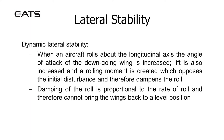Dynamic lateral stability: When an aircraft rolls about the longitudinal axis, the angle of attack of the down-going wing is increased. Lift is also increased and a rolling moment is created which opposes the initial disturbance and therefore dampens the roll. Damping of the roll is proportional to the rate of roll and therefore cannot bring the wings back to a level position.